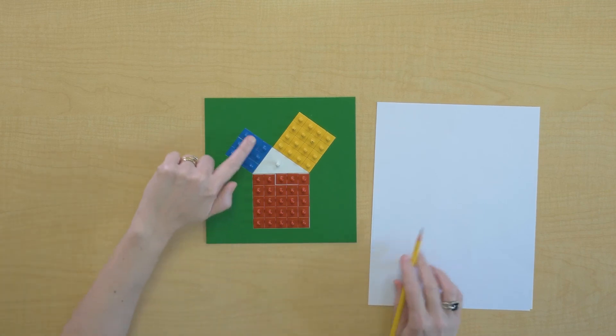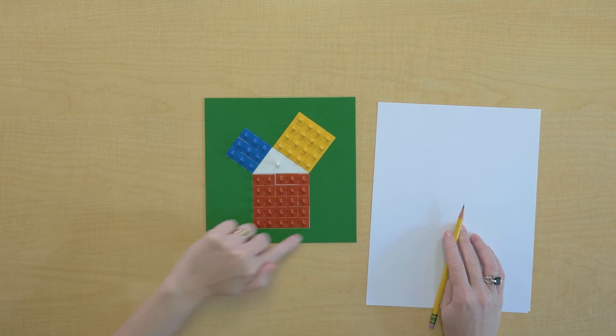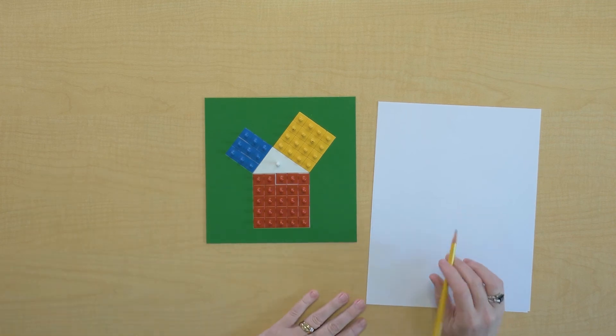So that means that here we have a three square, here we have a four square, and here we have a five square. We have a square of five on the hypotenuse.